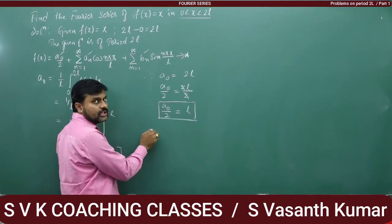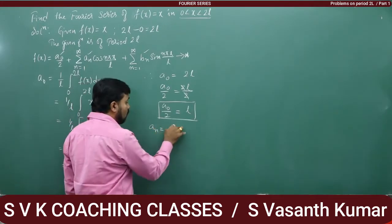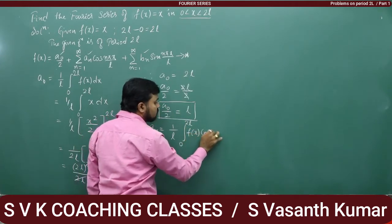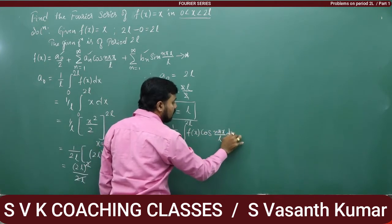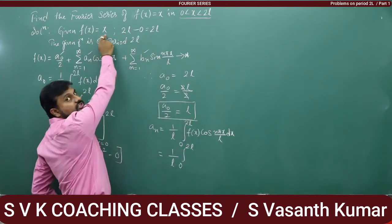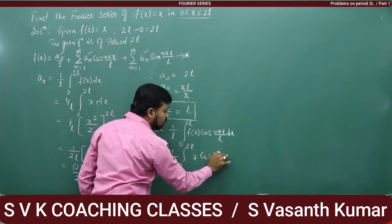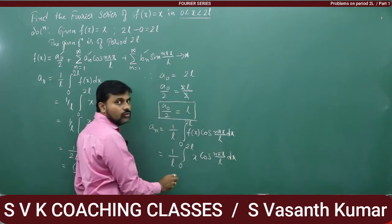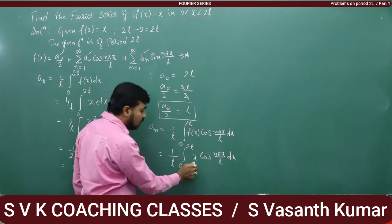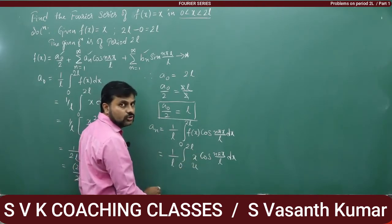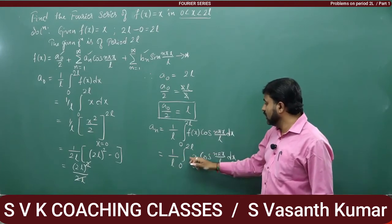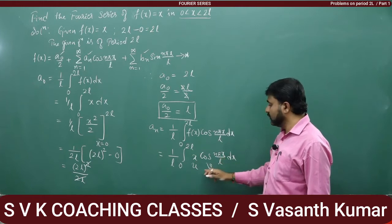Now let us find aₙ. aₙ is nothing but (1/L) integral from 0 to 2L of f(x) cos(nπx/L) dx. To integrate this, we apply Bernoulli's rule. The algebraic term x is taken as u (first term) and the trigonometric function cos(nπx/L) as v. So we integrate (1/L) integral from 0 to 2L of x cos(nπx/L) by Bernoulli's rule.